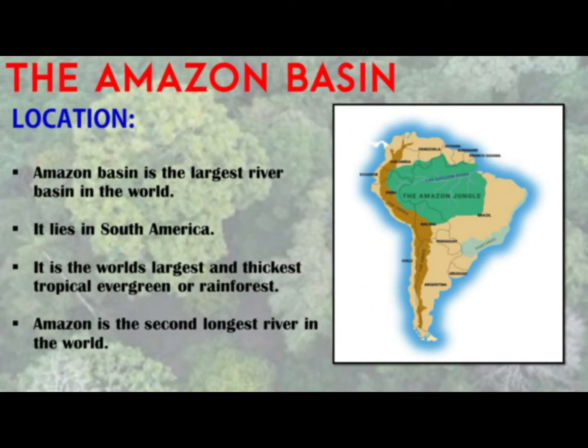Let's start today's first topic, Life in Tropical Forest Regions. Under that, we will study the Amazon basin. Amazon basin is the largest river basin in the world. It lies in the South America continent. This region covers Brazil, parts of Peru, Ecuador, and Colombia. Students, you have to locate Brazil on the map under the map skill. Please identify these countries, especially Brazil.